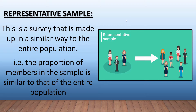Your representative sample is different. This is a survey that is made up in a similar way to the entire population. If we know what our population dynamics are for the entire country, then we can create a sample based on those same statistics. The proportion of members in the sample is similar to that of the entire population. So if there's 20% of this particular group, 15% of that, and 40% of the other, then your representative sample will be representative of that.